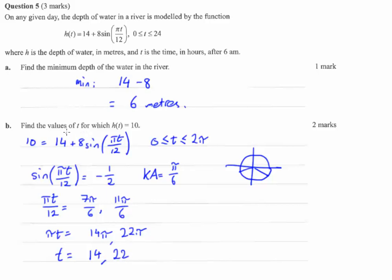Now notice it hasn't said find the hours, it's simply stated find the values of t for which h of t equals 10. So that's the question you need to answer. You need to say t equals 14 or t equals 22, and that's your answer there.